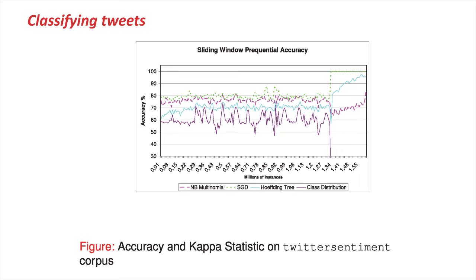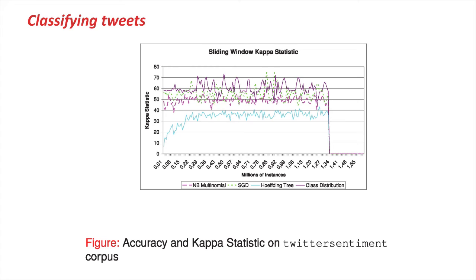At the end of the stream, the stochastic gradient descent classifier gets an accuracy of 100%. This is not normal, so it's worth understanding why it's happening. If we look at the kappa statistic, at the moment the accuracy goes up to 100%, the kappa statistic goes down. That means that at that point, the data starts to be completely unbalanced and belongs entirely to one class.